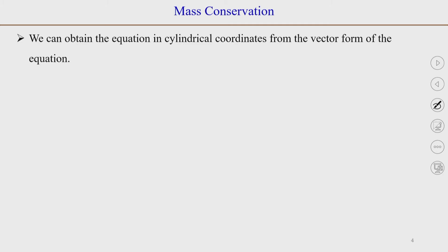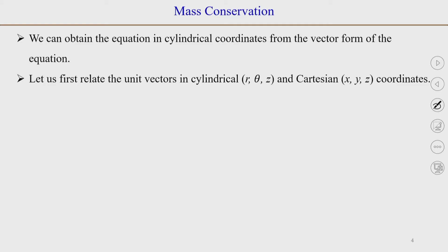We can use the vector form of the equation, del rho by del t plus del dot rho v equals 0, and write the del operator and v in cylindrical coordinates, then find the dot product to obtain the expanded form of the continuity equation in cylindrical coordinates. To do this, we first need to understand the derivatives of unit vectors, so we will relate the unit vectors in cylindrical and Cartesian coordinates.